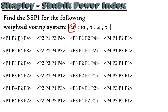Moving to the next coalition: 10 plus 7 plus 3 equals 20, so we underline player 4. In the third coalition, player 1 has 10, player 3 has 4, player 2 has 7 — 10 plus 4 plus 7 equals 21, so player 2 is pivotal. In another coalition, player 1 has 10, player 3 has 4, player 4 has 3 — that's 17, not enough — so we need the fourth player, player 2, with 7 votes, which adds up to 24.